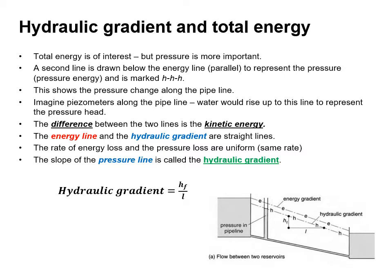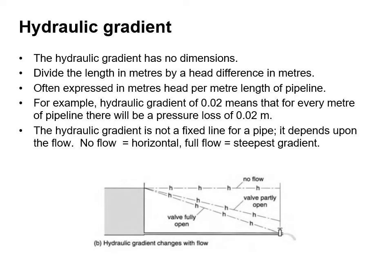The slope of the pressure line is called the hydraulic gradient, and is calculated as shown. The hydraulic gradient has no dimensions — we divide the head difference in meters by the length in meters. It's often expressed in meters head per meter length of pipeline. For example, a hydraulic gradient of 0.02 means that for every meter of pipeline there will be a pressure loss of 0.02 meters of head. The hydraulic gradient is not a fixed line for a pipe — it depends upon the flow. With no flow it is horizontal; at full flow it is at its steepest gradient.